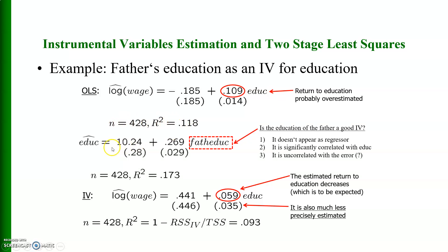If we regress the original education variable on father's education, we get an estimated equation. Is father's education a good instrumental variable? First, it does not appear as a regressor in the model. Second, it is significantly correlated with education, as the coefficient is significant. Third, it is uncorrelated with the error term. Using this instrumental variable, the estimated return to education in the log wage equation decreases and is also much less precisely estimated.